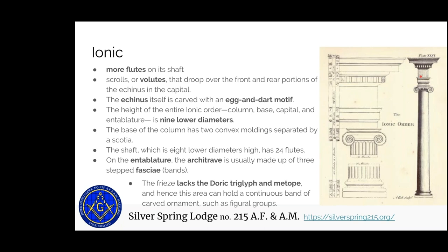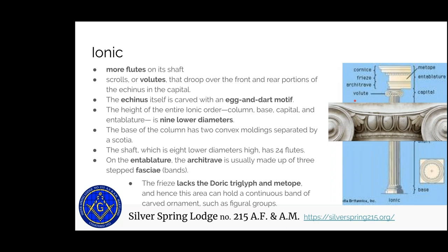The base of the Ionic column has two convex moldings — two smaller rings separated by a scotia in between — and then the shaft is eight lower diameters high, with the base and capital adding up to one lower diameter. On the entablature, the architrave is made up of three-step fascia. The frieze doesn't have the triglyph grooves and metopes of the Doric — this area was used for larger sculptures and larger designs to carry across an entire section of the top of a building.